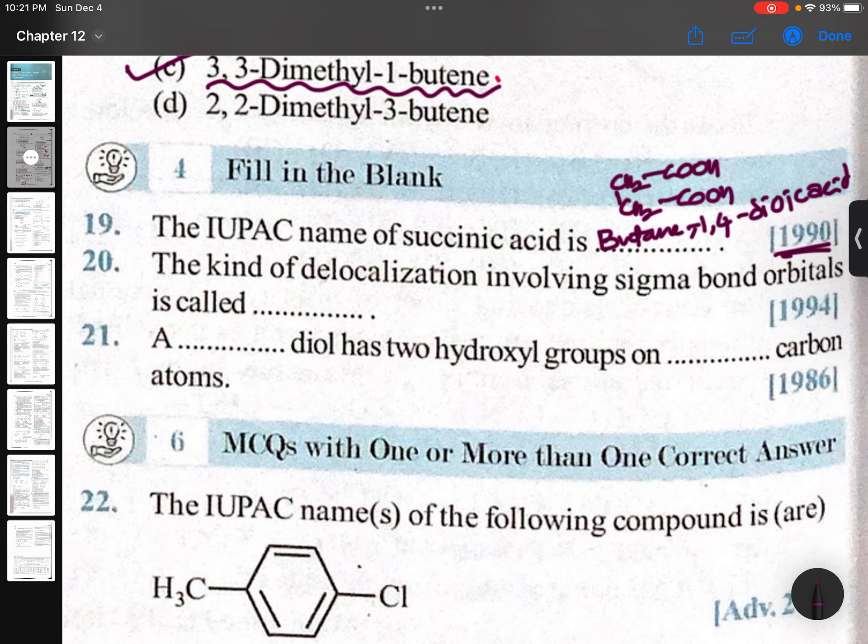The kind of delocalization involving sigma bond orbitals is called - this question should not be here - it is called hyperconjugation. You will learn this in electronic displacements.